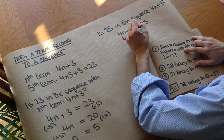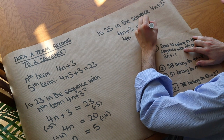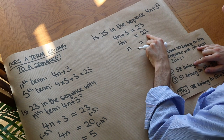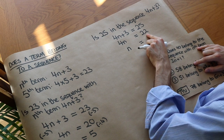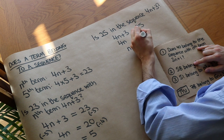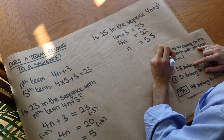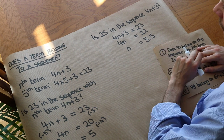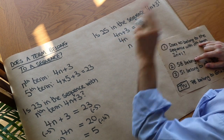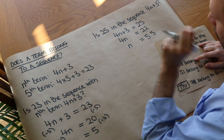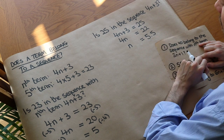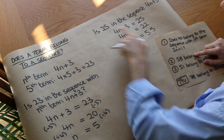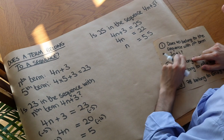We subtract 3 from both sides to get 22, then divide both sides by 4. Half of 22 is 11, and half of 11 is 5.5. So 25 would be the 5.5th term of the sequence, which is not allowed. We can only have integer positions like the fourth or fifth term — we can't have a fractional position. Therefore, 25 is not in the sequence with this nth term formula.